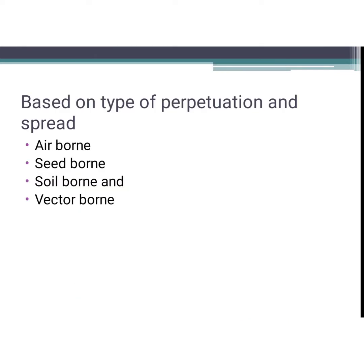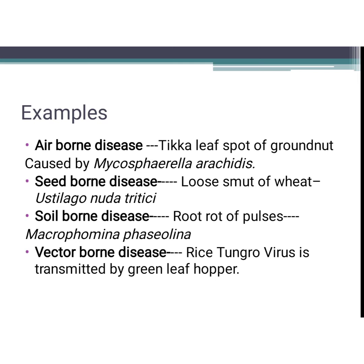Based on mode of spread, diseases are classified as air-borne, seed-borne, soil-borne, and vector-borne diseases. An example of an air-borne disease is Tikka leaf spot of groundnut, caused by Mycosphaerella arachidis (Cercospora arachidicola or Cercospora personata). Seed-borne disease example is loose smut of wheat, caused by Ustilago nuda tritici — it is an internally seed-borne disease, a very frequently asked question.